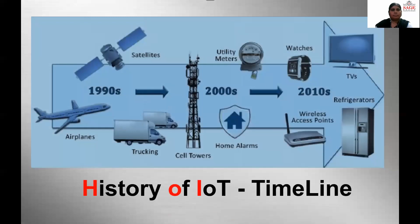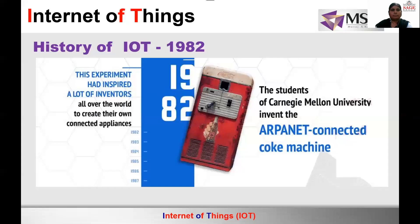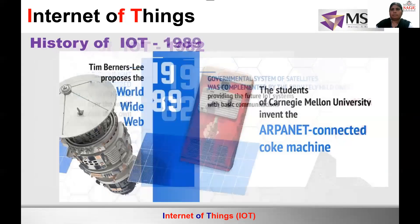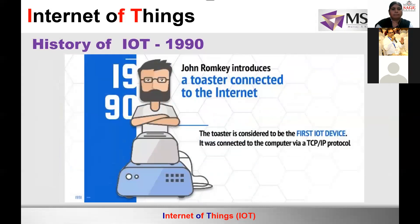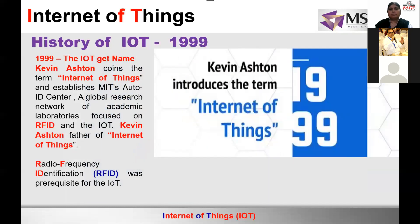When did IoT actually start? It started somewhere in 1982 when Carnegie Mellon University students connected a Coke machine to the internet — but this was not actual IoT. Then in 1989, the concept of WWW, the World Wide Web, came, and the very first device connected to it was a toaster, which was actually the first internet device. It worked with TCP/IP protocol using a computer.